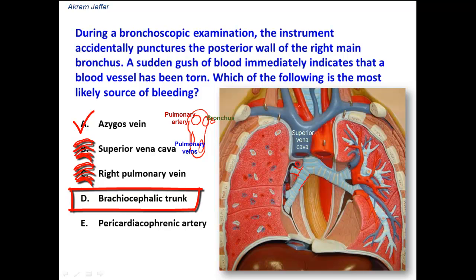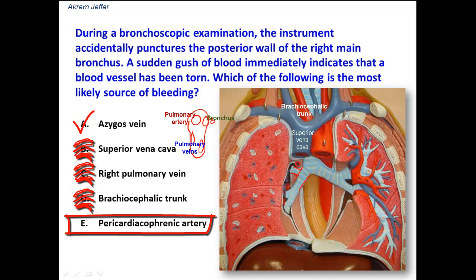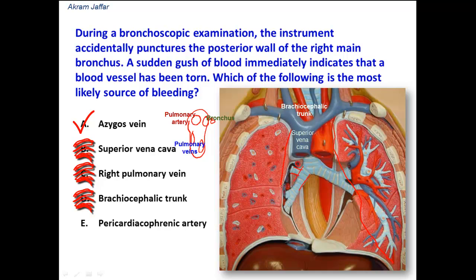The brachiocephalic trunk is far away from the right main bronchus. The pericardiophrenic artery is a branch of the internal thoracic artery; it accompanies the phrenic nerve and supplies the pericardium and diaphragm, and is located related to the pericardium anteriorly. It is not related to the posterior aspect of the right main bronchus. Therefore, it is the azygous vein that arches from posterior to anterior over the right main bronchus to open into the superior vena cava, and this vein is most likely to be injured following posterior penetration of the right main bronchus.